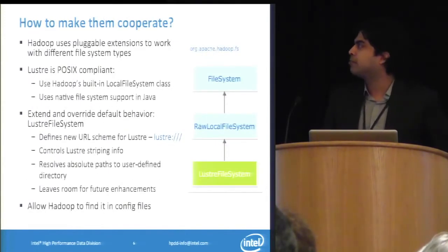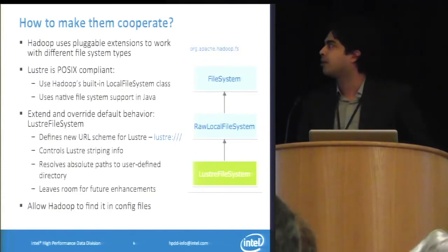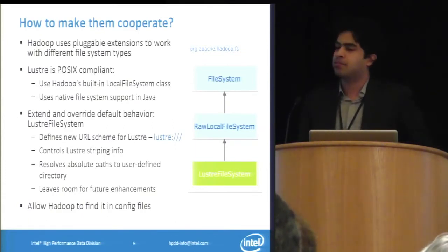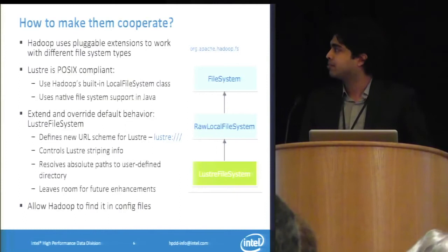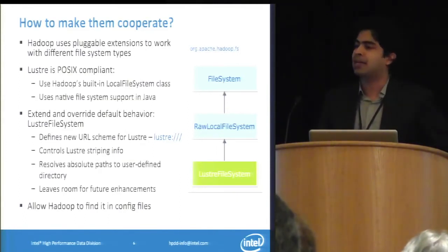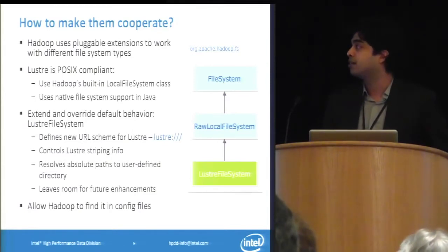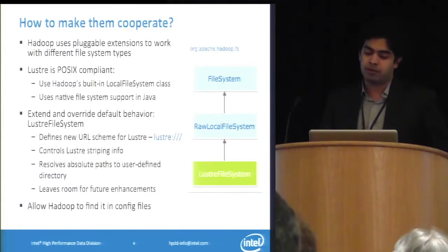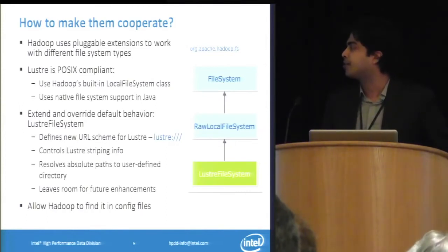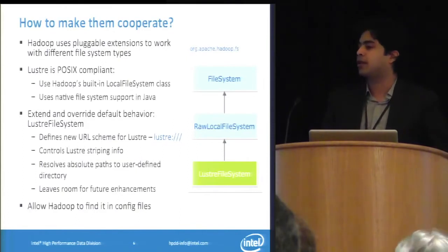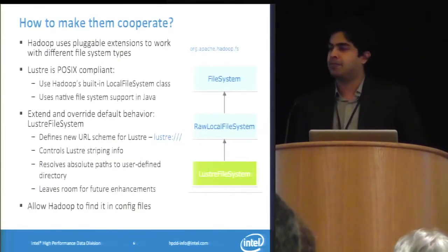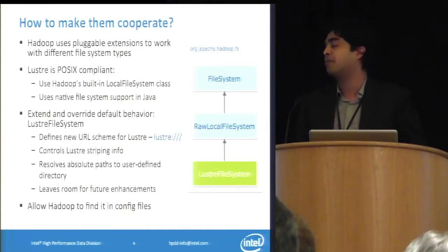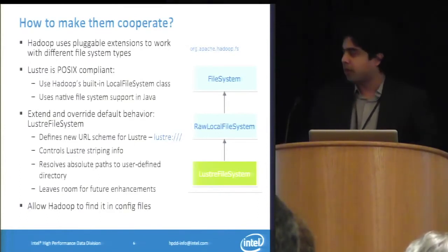This is how we made Hadoop run on Lustre. Hadoop uses a pluggable file system extension and supports any POSIX-compliant file system. So it was straightforward — we extended the built-in classes, created our own Lustre file system class, and defined a new URL scheme so that files placed on Lustre are prefixed with the Lustre URI.